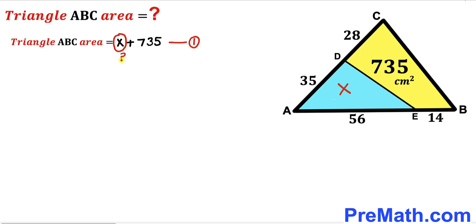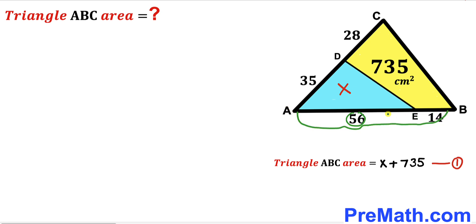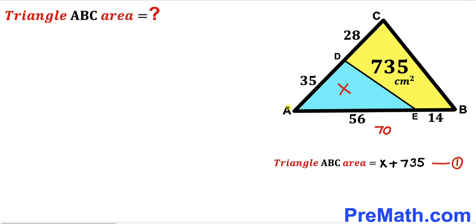Segment AE is 56 and segment BE is 14, so the whole side AB length is 14 + 56 = 70 centimeter. Likewise, segment AD is 35 and segment CD is 28, so side AC length is 35 + 28 = 63 centimeter. Let's label angle BAC as theta.